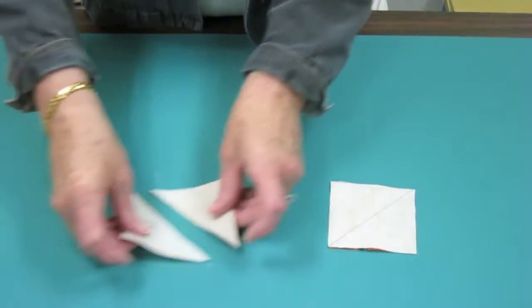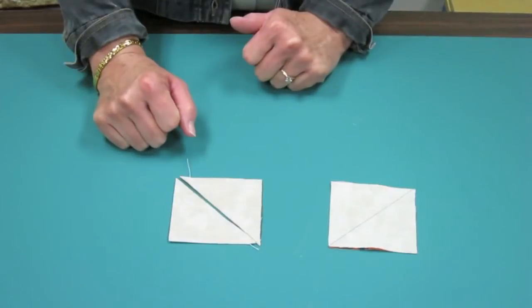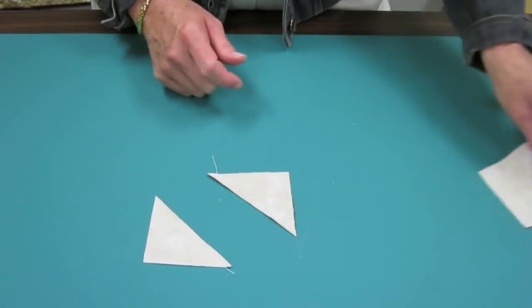So then I'll take those, and I will cut on that drawn line, and I'll end up with two triangle squares.